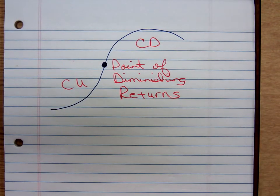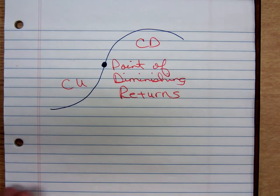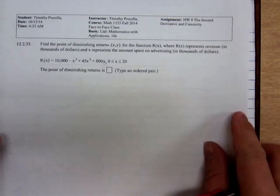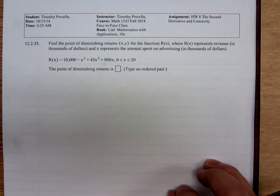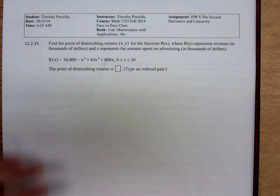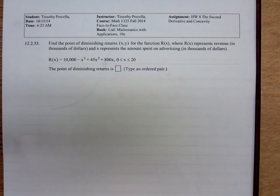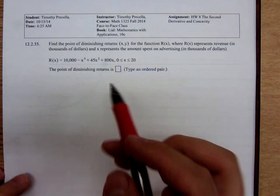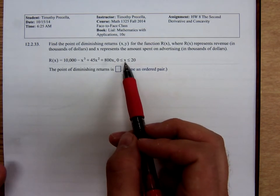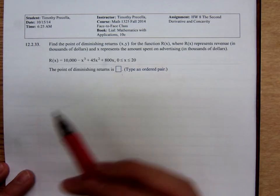And we'll do an example. Here it is. Find the point of diminishing returns for the function R(x). And notice that x represents the amount spent on advertising in thousands of dollars, and this function is only good for x values between 0 and 20.